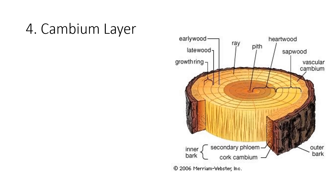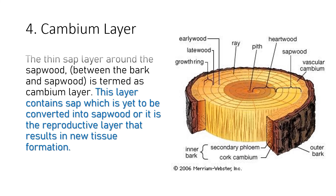The cambium layer is the thin sap layer that surrounds the sapwood, positioned between the bark and the sapwood. This layer contains sap which is yet to be converted into sapwood, and it is the reproductive layer that results in new tissue formation.